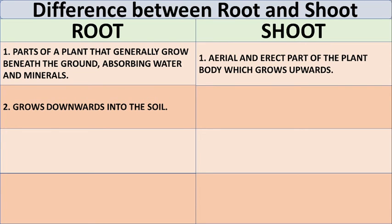Root grows downwards into the soil. Shoot grows upwards above the soil.